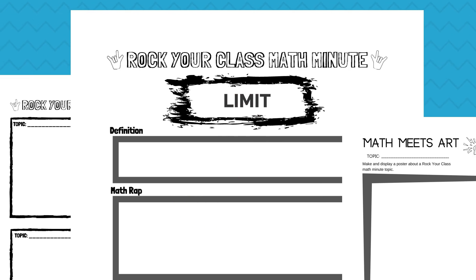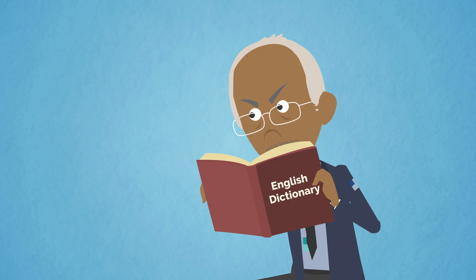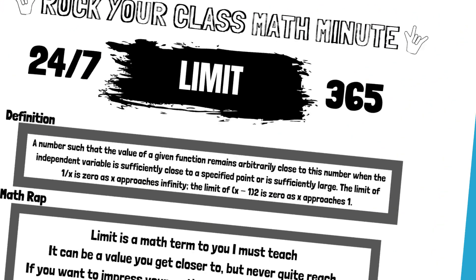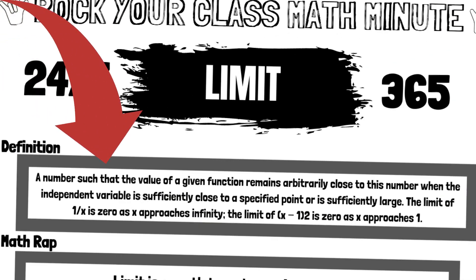Limit. What does the dictionary say? A number such that the value of a given function remains arbitrarily close to this number when the independent variable is sufficiently close to a specified point or is sufficiently large. The limit of 1 over x is 0 as x approaches infinity.